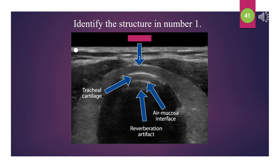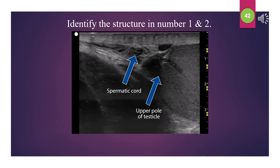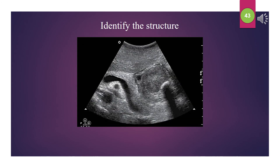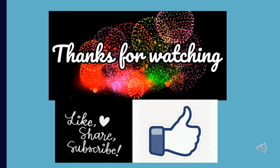Identify the structure in number 1. That is the isthmus. Identify the structures in numbers 1 and 2. One is the spermatic cord; two is the upper pole of the testicle. Identify the next structure. That is the stomach leiomyoma.